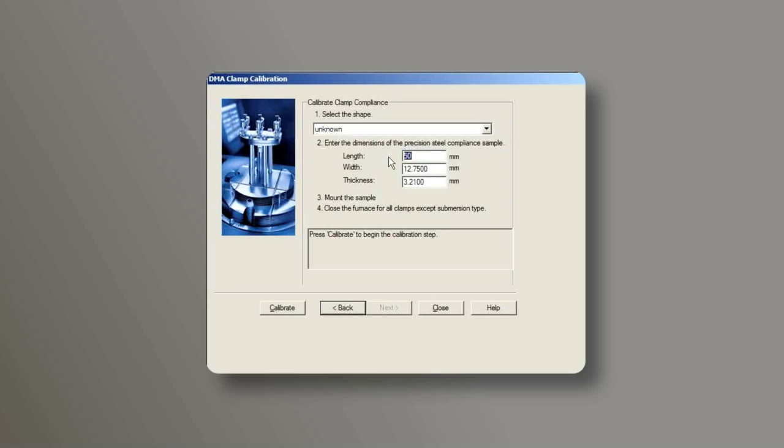From the control software, enter the length, width, and thickness of the steel shim. Then click on Calibrate.